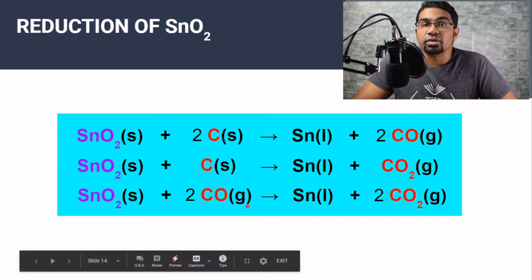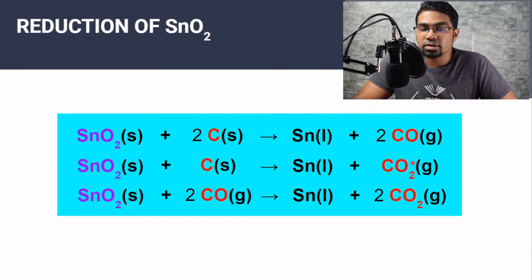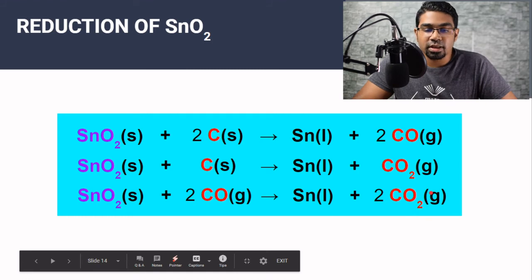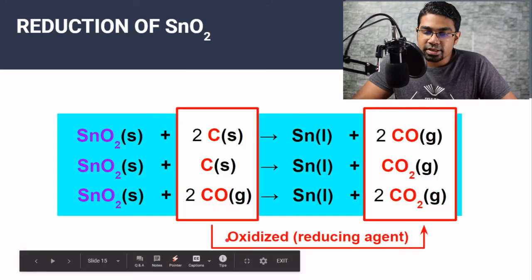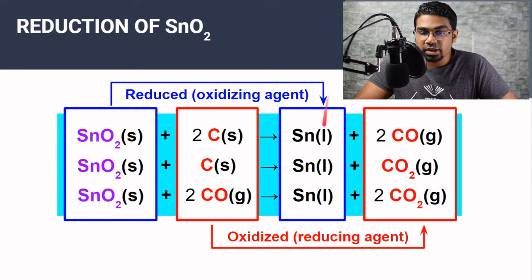Carbon monoxide also acts as a reducing agent to reduce the tin(IV) oxide — tin comes out and carbon dioxide is produced. Carbon gains oxygen and is therefore oxidized; carbon monoxide becomes carbon dioxide, also gaining oxygen and being oxidized. Since carbon and CO are themselves oxidized, they act as reducing agents — they steal the oxygen from the tin(IV) oxide. Tin(IV) oxide loses oxygen and becomes tin, so it is reduced and acts as the oxidizing agent.